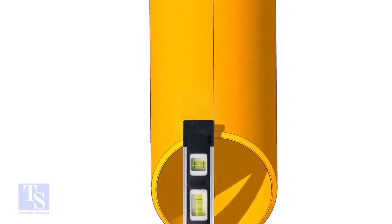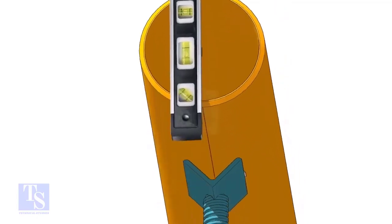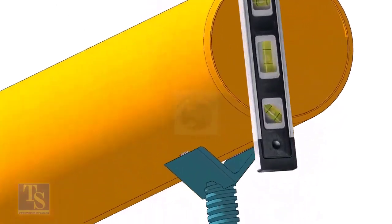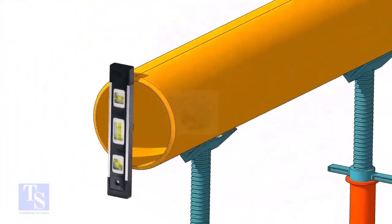Level the pipe horizontally and vertically as shown. After leveling, arrest the pipe to stop it from rotating.